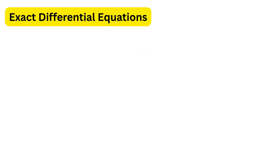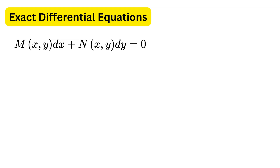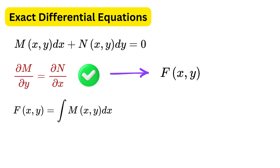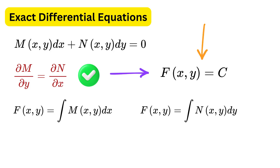Now we will look at exact differential equations. Some equations can be written as M(x,y) dx plus N(x,y) dy equals 0. They are called exact when the partial derivative of M with respect to y equals the partial derivative of N with respect to x. If this condition holds, there exists a single function f(x,y) such that f(x,y) equals c, where c is the constant of integration.